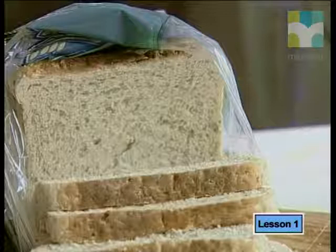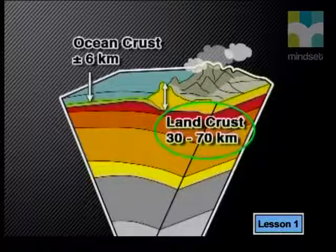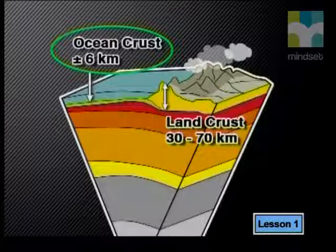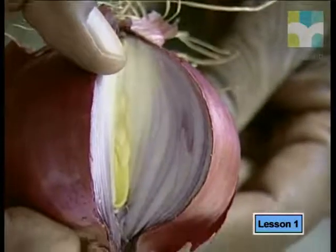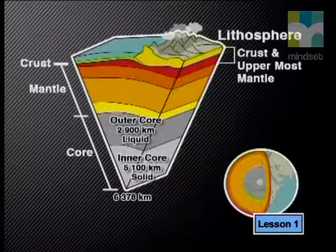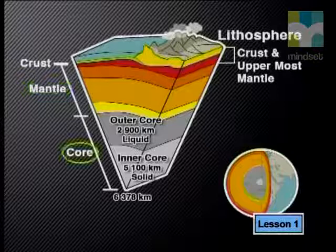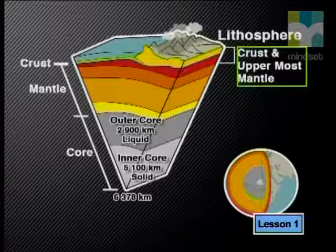Just like a crust of bread is quite thin, so is the earth's crust. On land, the crust varies between 30 and 70 kilometers thick, but under the sea it is only about six kilometers thick. One way to think about the earth's structure is to compare it to an onion — the thin skin is like the thin crust we live on. Geologists have identified three main layers: the crust, the mantle, and the core.